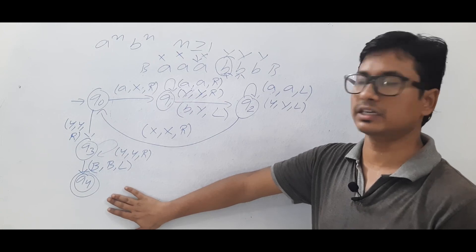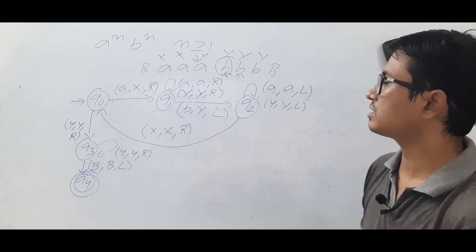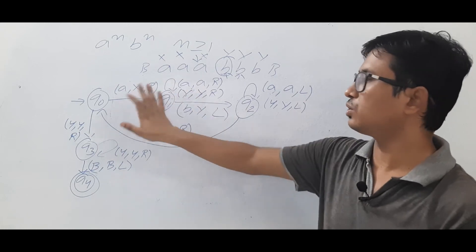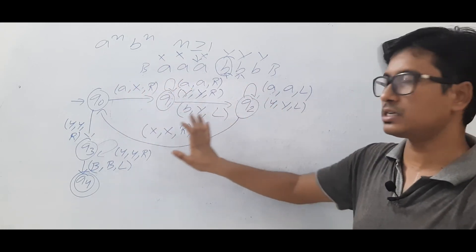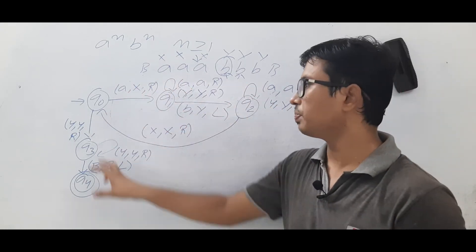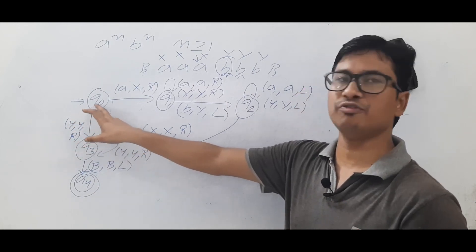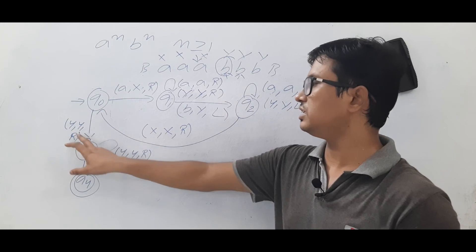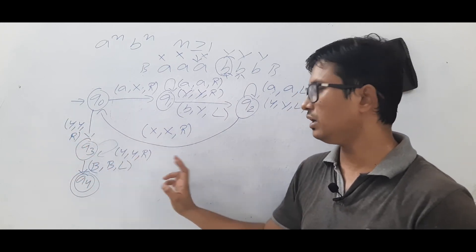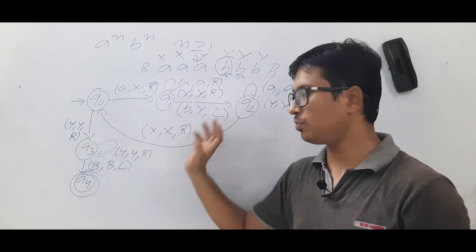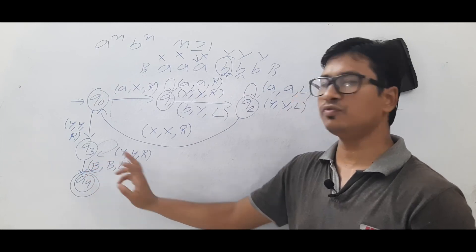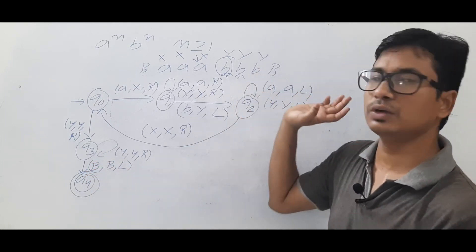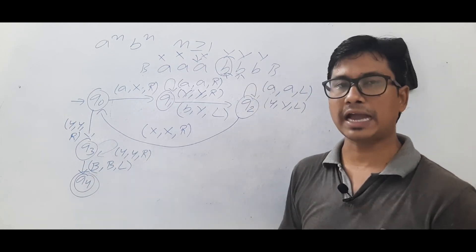Q4 is the final acceptor state. What we have done is marked all A's as X and all B's as Y. Once all A's are finished, we scan through Y's to the right. If we see a blank, there are no remaining B's, so the number of A's equals B's and we accept.